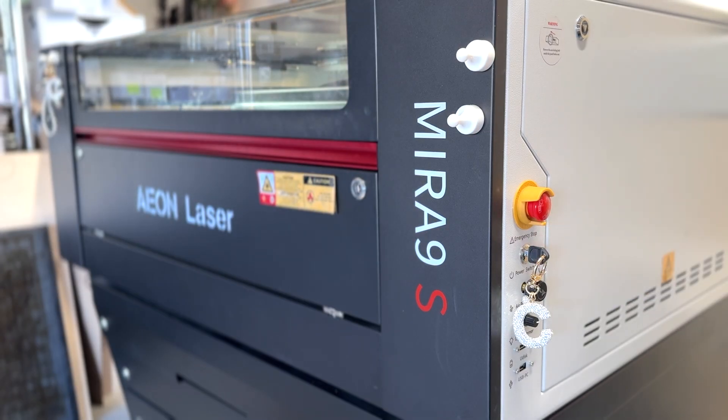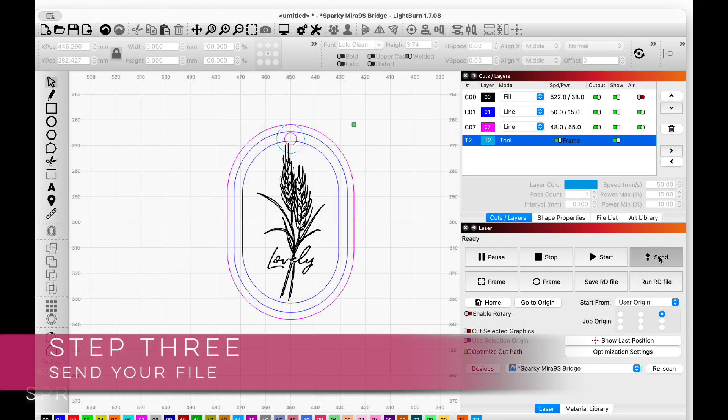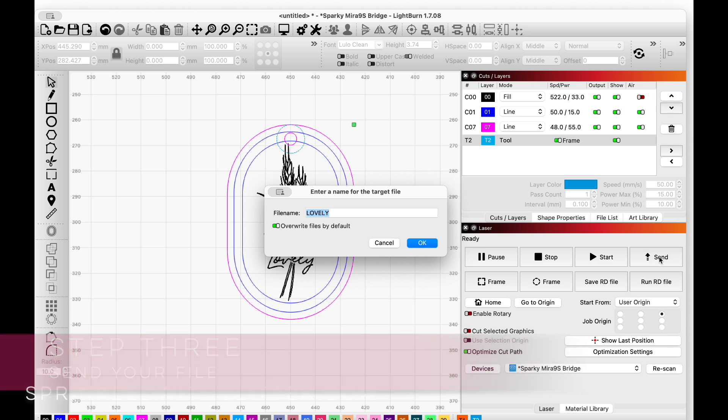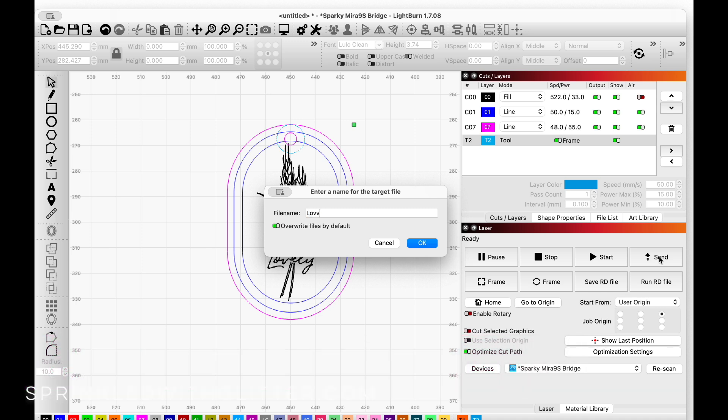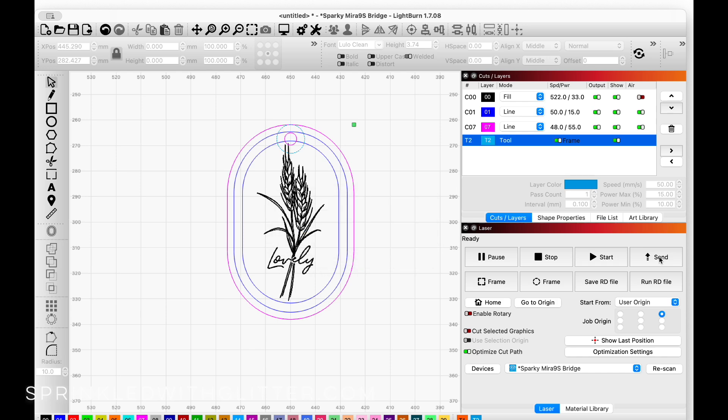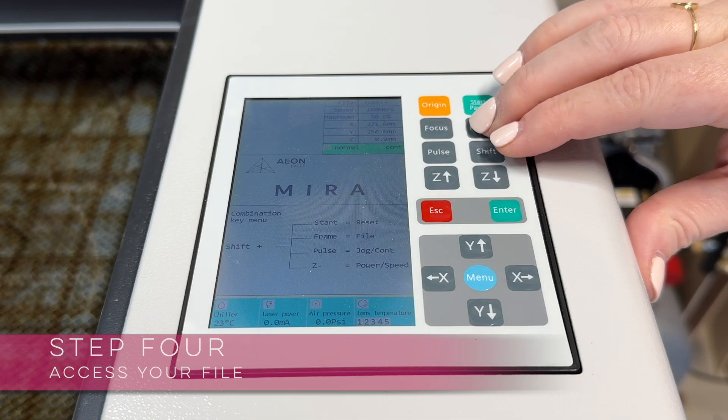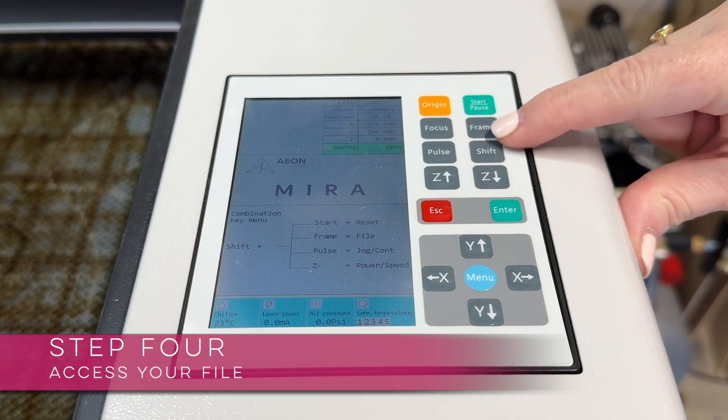Turning this key just gives me so much joy I can't even tell you. So the third step is to go back to our computer and we're going to send our file to our laser. You can name it whatever you want, it will automatically populate with the file setting or the last used name, and once it's sent we're on to step number four which is to access our file.